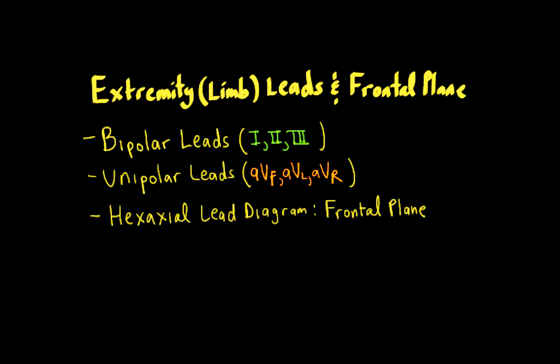For the extremity leads — the limb leads — the patient has electrodes placed on the right arm, left arm, right leg, and left leg. Typically they're on the wrists and ankles. The right leg electrode functions solely as an electrical ground, so we don't need to be concerned about that any further.